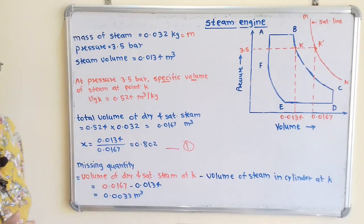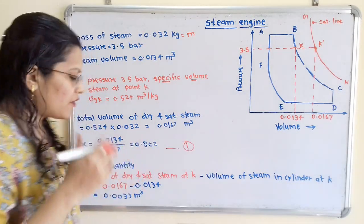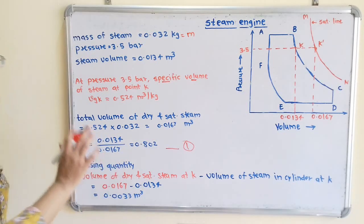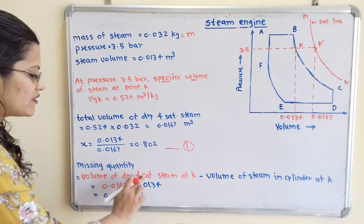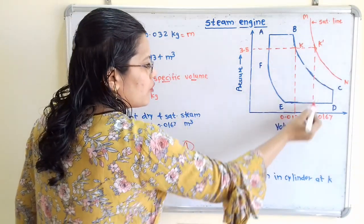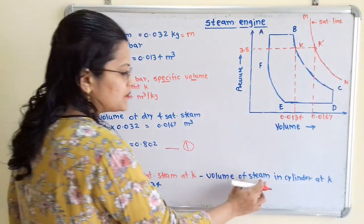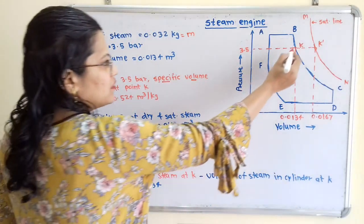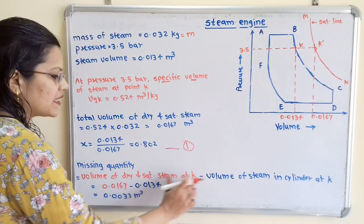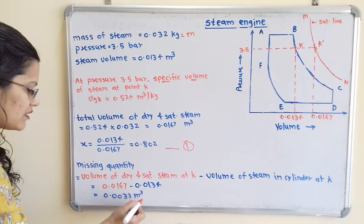Now we will calculate the missing quantity. The formula is: volume of dry and saturated steam at point K (which is 0.0167 m³) minus the volume of steam in the cylinder at point K (which is 0.0134 m³). Subtracting gives the missing quantity equal to 0.0033 m³. This is the answer to the second question.